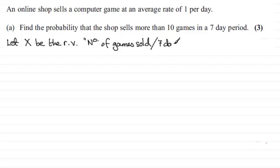And this random variable X is going to follow a Poisson distribution. So we'll say where X is distributed as a Poisson distribution. And the mean, well we're told that there's an average of one sold per day. So for seven day period that's going to be a mean of seven.